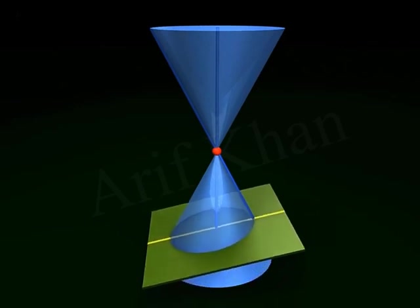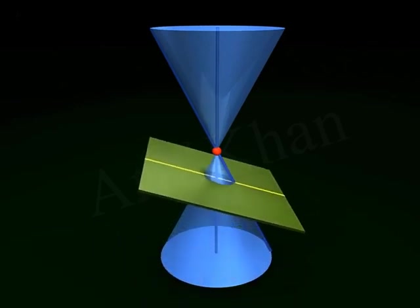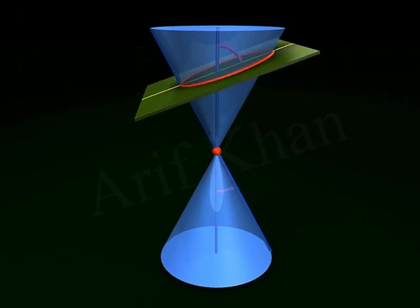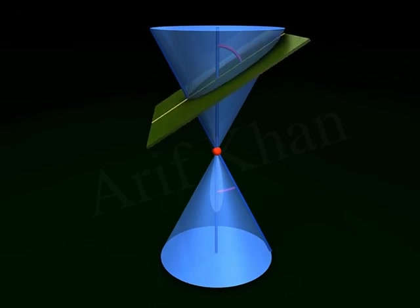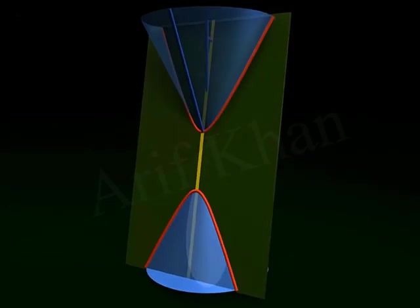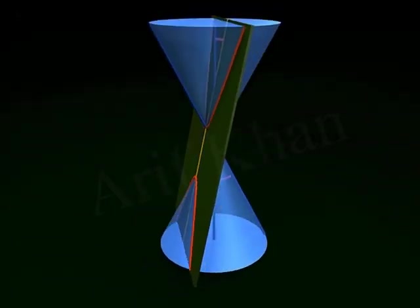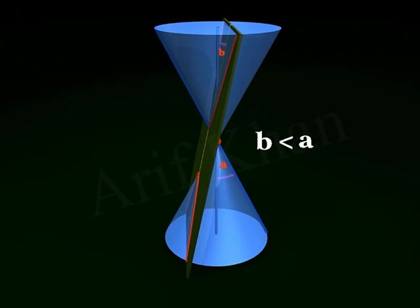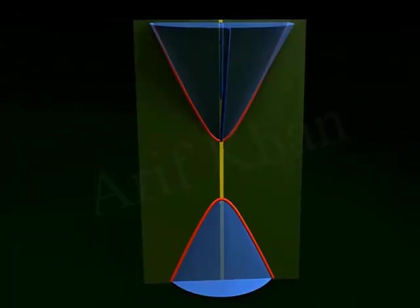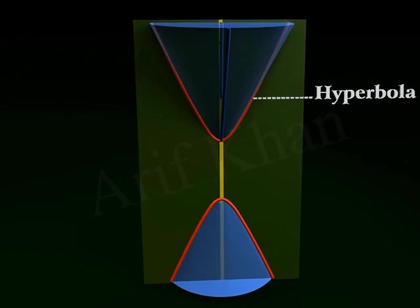Hyperbola. The plane intersects only one nap of the double right circular cone as long as the angle between the plane and the vertical axis is greater than or equal to the vertex angle. However, if the plane intersects the vertical axis at an angle smaller than the vertex angle, the plane intersects both naps of the cone to form an open curve called a hyperbola, which has two disjoint curves.